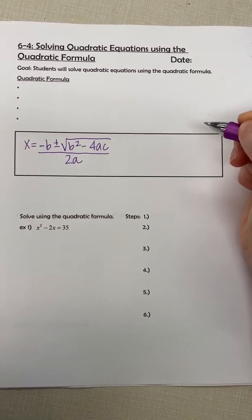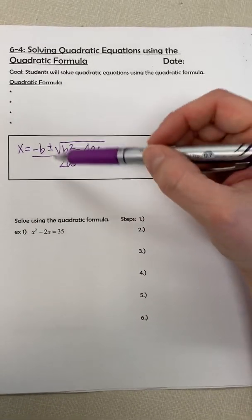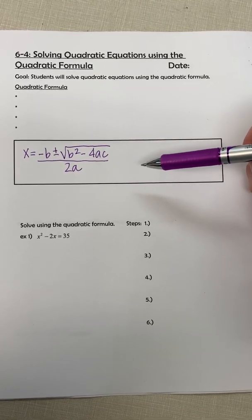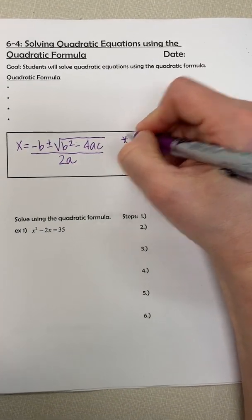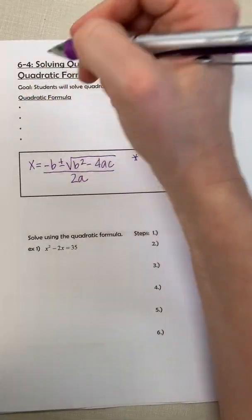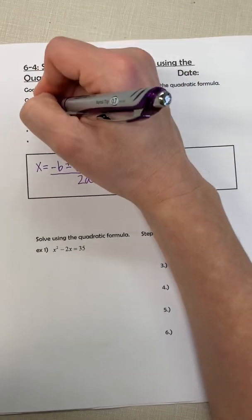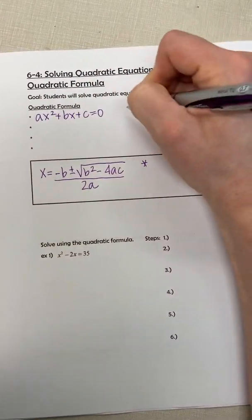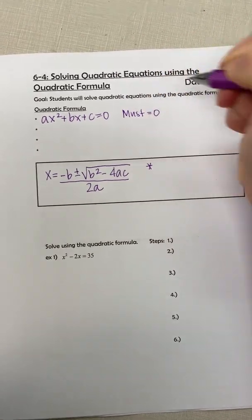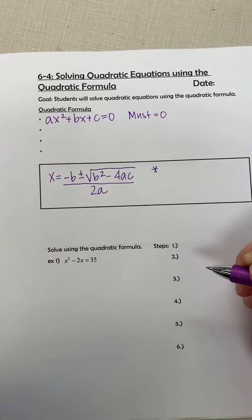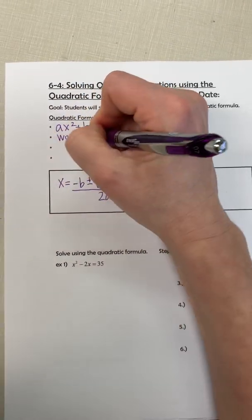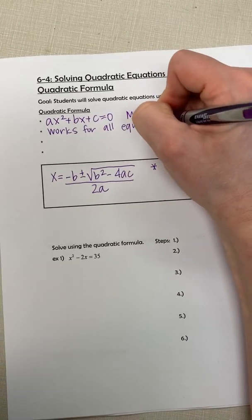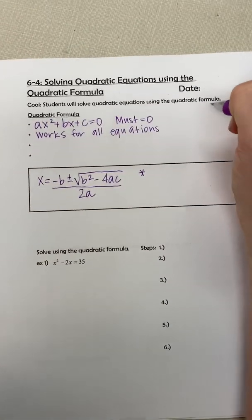So with the quadratic formula, this big formula, we're going to use it to solve. This works instead of factoring, instead of solving by square root. It works for all types of quadratics. First of all, the quadratic has to be written in this form, so it must equal zero. This works for all equations that are quadratic.